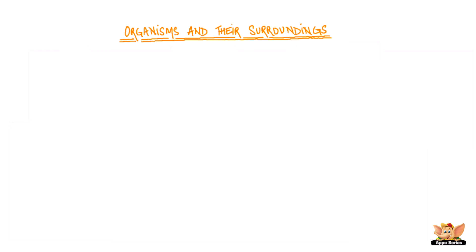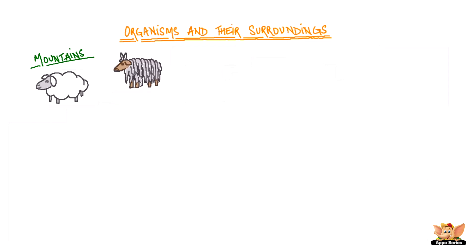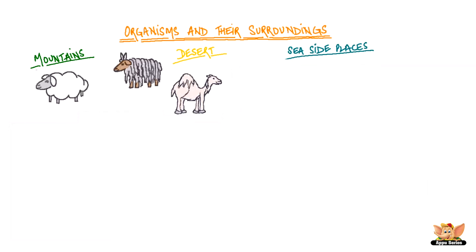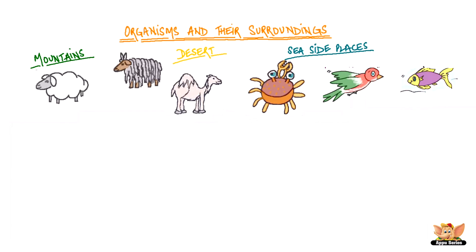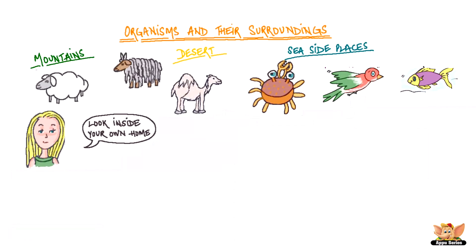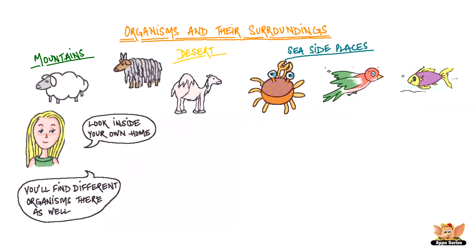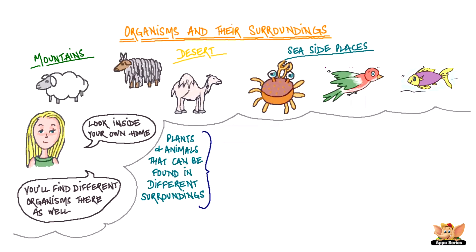Organisms and their surroundings. The mountains have sheep and goat, the desert has camels, and the seaside places have crabs and different kinds of birds and fish. Look inside or around your home and you will find different organisms there as well. Let's make a list of different plants and animals that can be found in different surroundings.